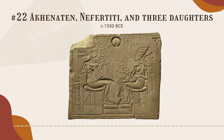Akhenaten was pharaoh of the 18th dynasty during the New Kingdom period. He was the second son of Amenhotep III and his queen. Records indicate that Akhenaten ruled alongside his father as co-pharaoh for about eight years. When his father died around 1353 BCE, Akhenaten became the pharaoh in his own right. His queen was the famous Nefertiti, and together they had six daughters. Akhenaten also had one recorded son, the famous Tutankhamun. For the first five years of his reign, Akhenaten was known as Amenhotep IV, and his policies were fairly consistent with the rulers that came before him.